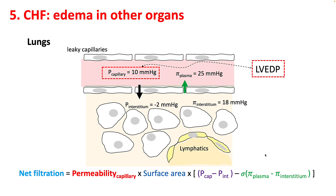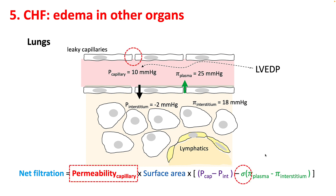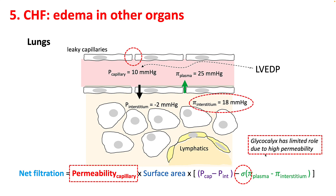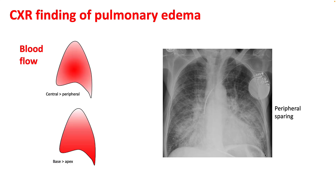In the lungs, your capillary pressures are determined by your left-sided pressures rather than right-sided pressures. These capillaries are much more leaky with a lower reflection coefficient, and the glycocalyx has a limited role in these places because of high permeability. There is more blood flow to the central areas of the lungs compared to the peripheral areas, and more blood flow to the base than the apex. This results in the typical batwing appearance that you see on your chest X-ray.